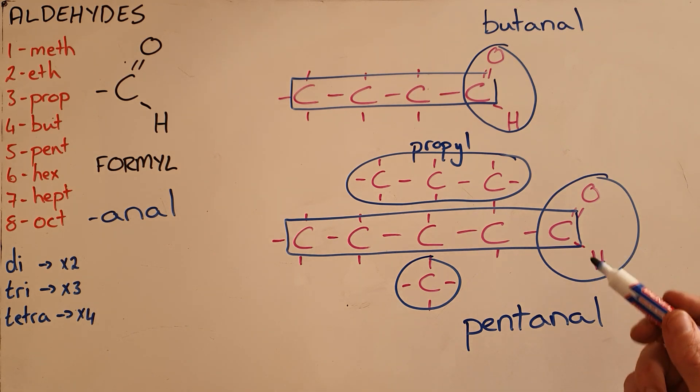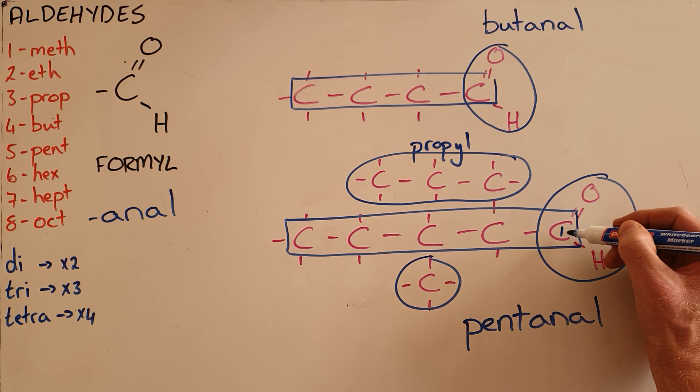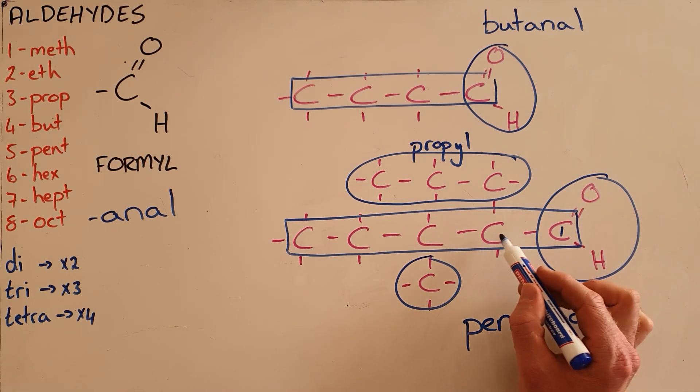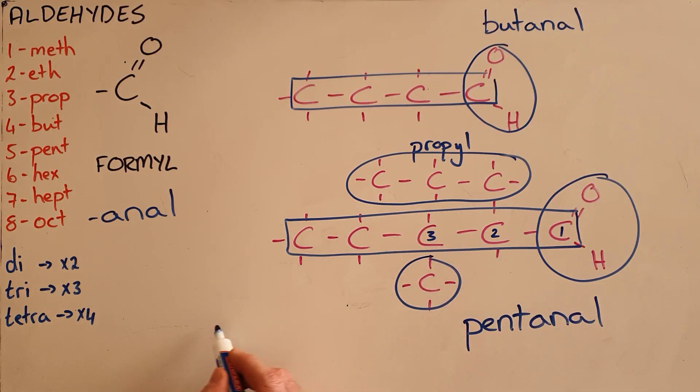Because this is an aldehyde, this is automatically carbon number one, and as a result the propyl branch must be on carbon number two and the methyl branch on carbon number three. So alphabetically we would call this 3-methyl-2-propylpentanal. Once again, this is all one word.